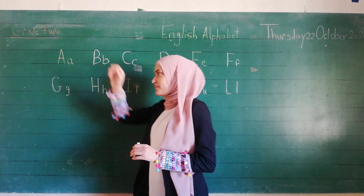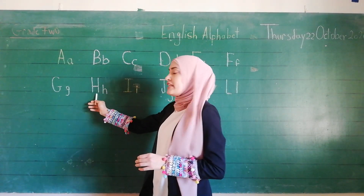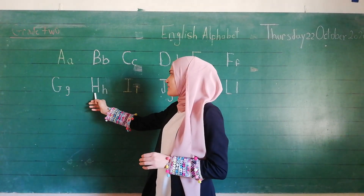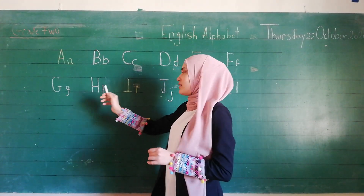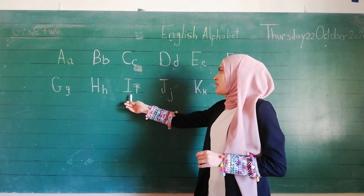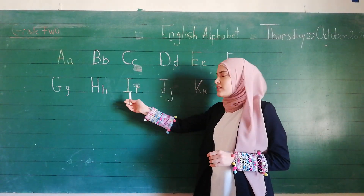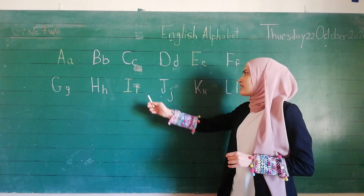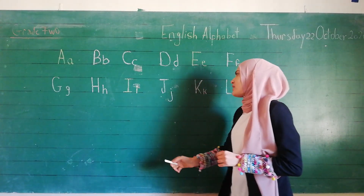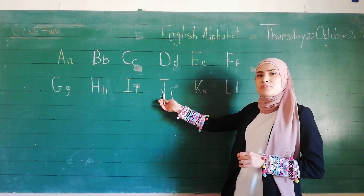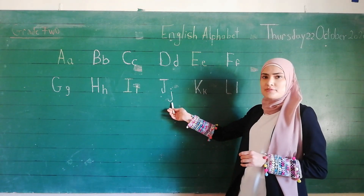For example, H — capital and small. I — capital and small letter. G — capital, small letter.